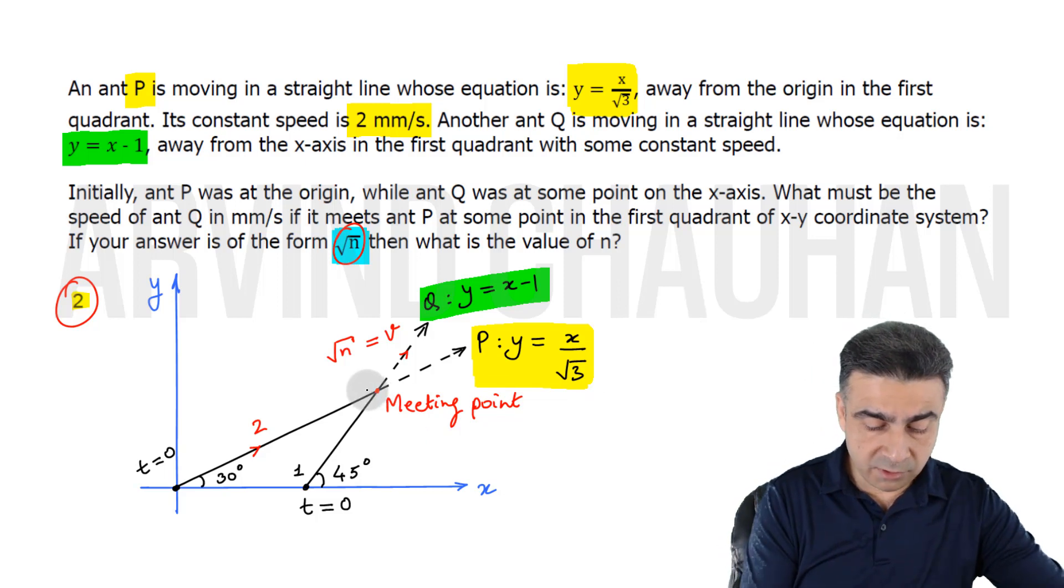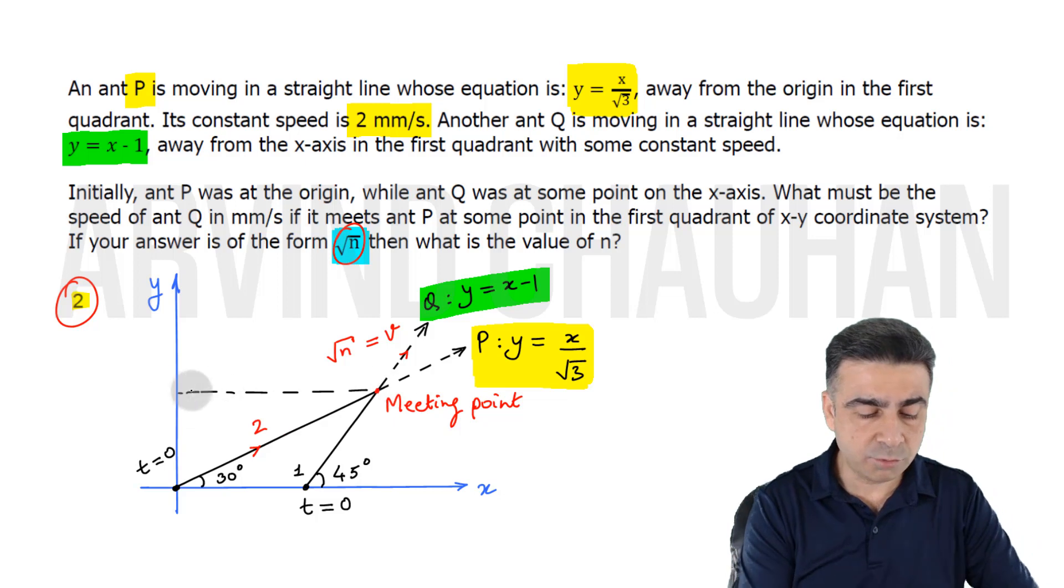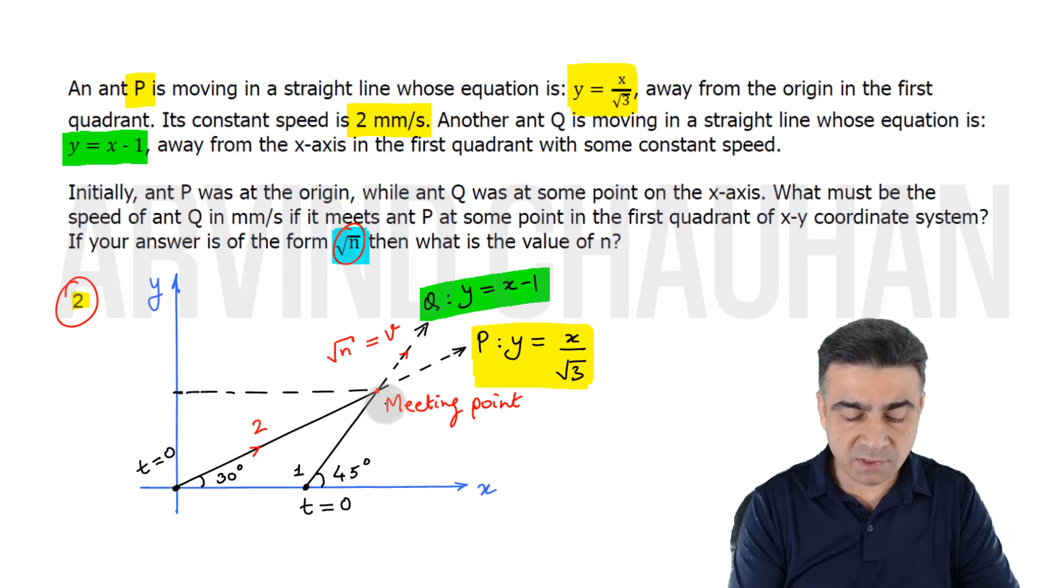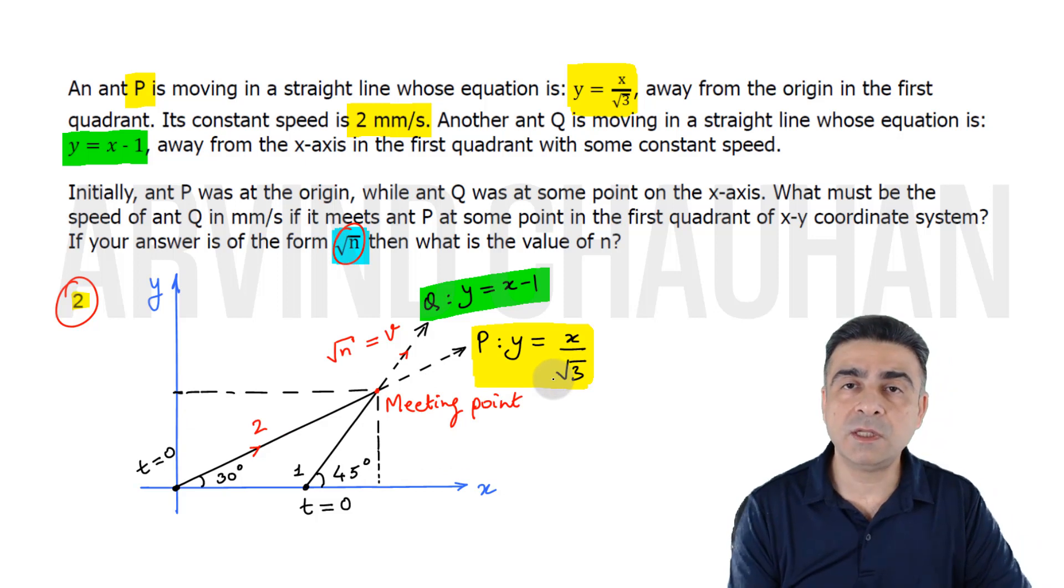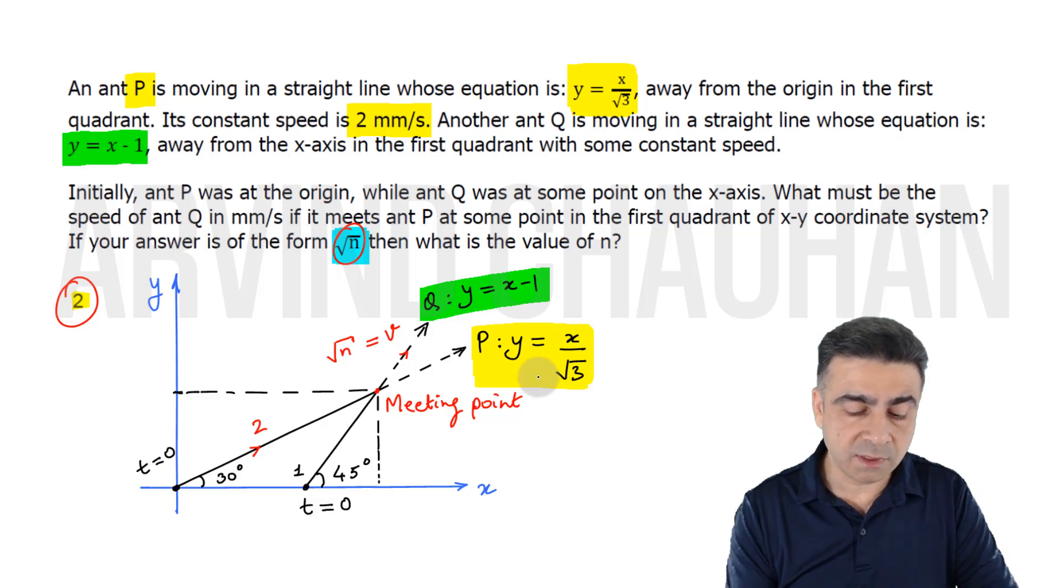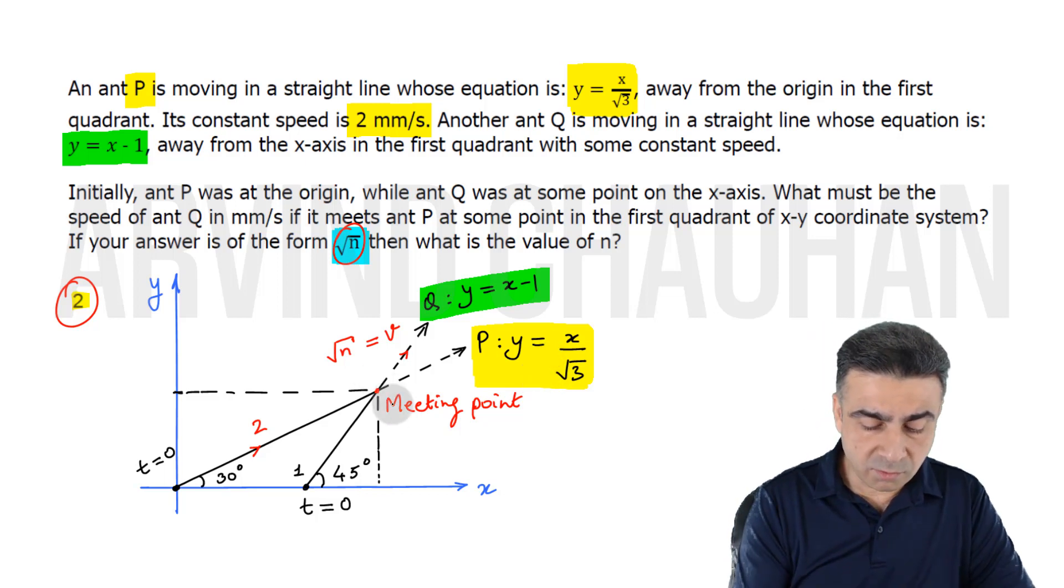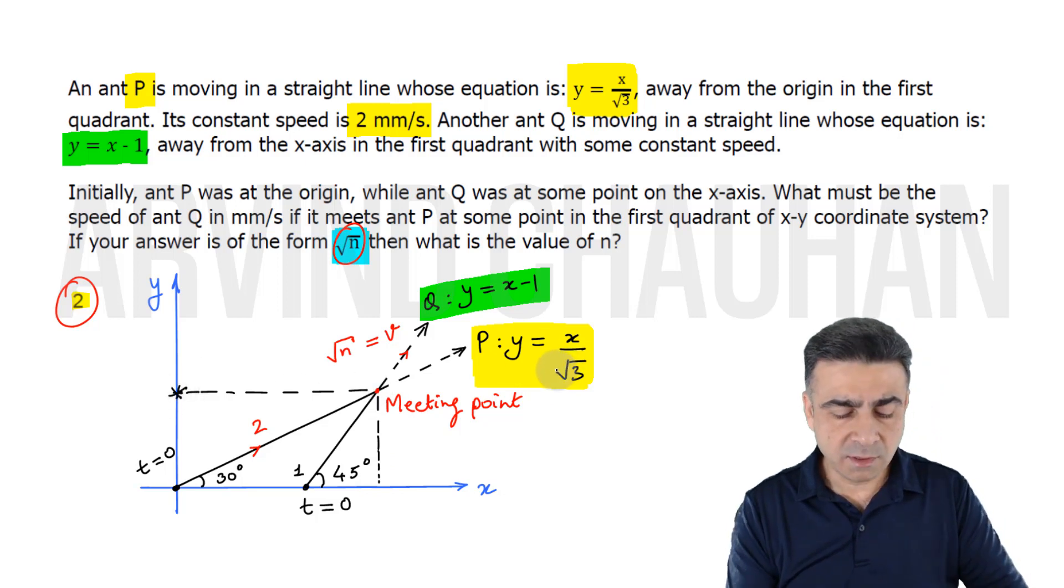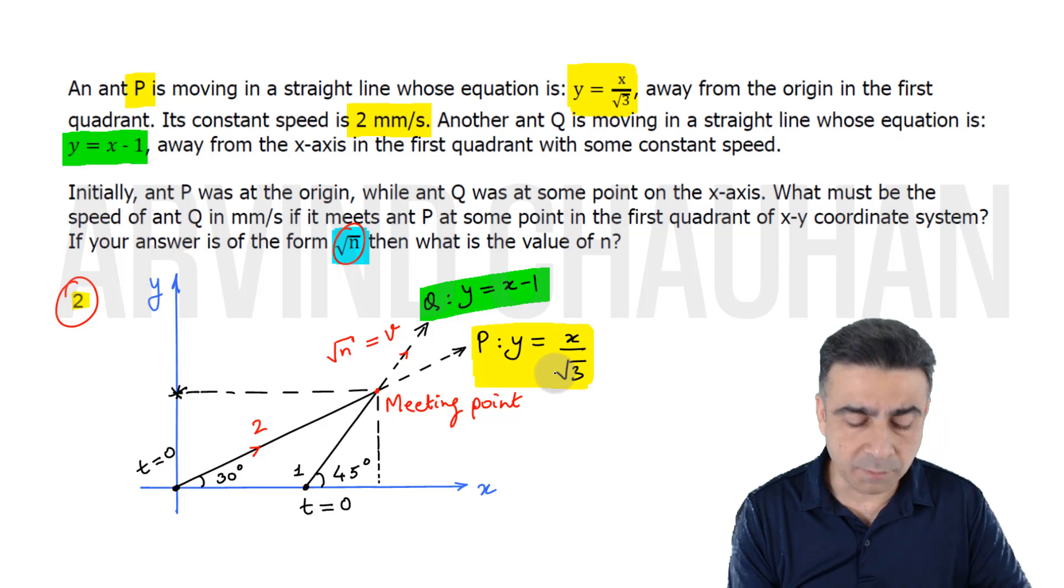When they meet, their y-coordinates should become the same. From the same logic, their x-coordinates should also become the same. There are three ways of doing it: equate the y-coordinates, equate the x-coordinates, or equate the time spent using actual distances. In this case, equating the y-coordinates would be most straightforward because both have 0 y-coordinate in the beginning.